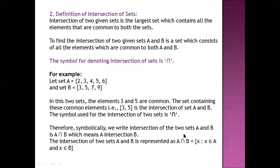It is denoted as A ∩ B. How do we write it? X such that X belongs to A and X belongs to B. If we write this symbolically: A ∩ B = {X : X ∈ A and X ∈ B}. It means X is such an element which belongs to both sets.